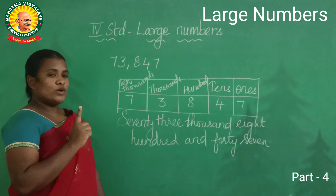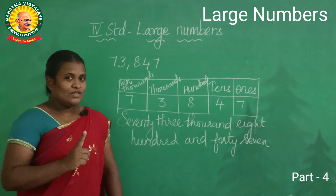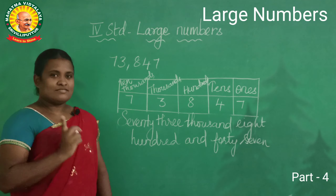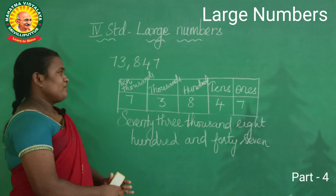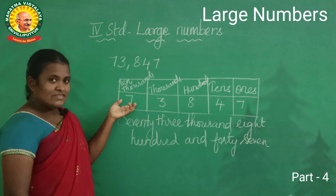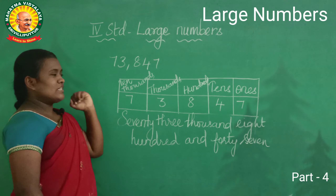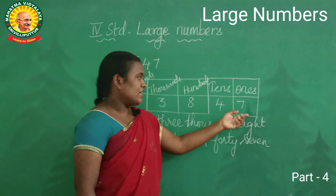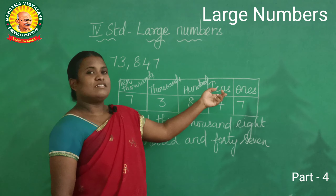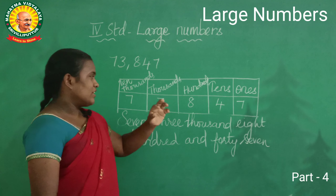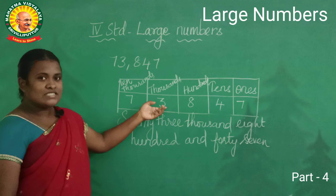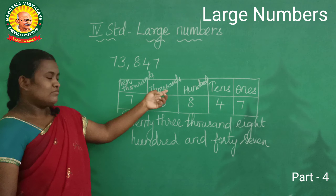Now this will say you a number and you have to say its places. The place of seven is ten thousands — very good. The place of four is tens — very good. The place of three is thousands.